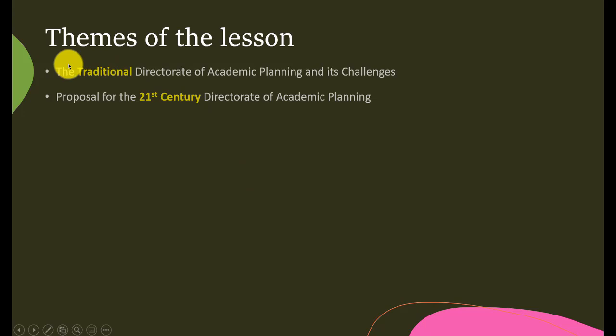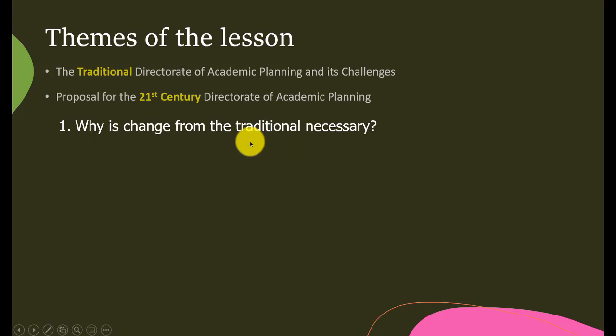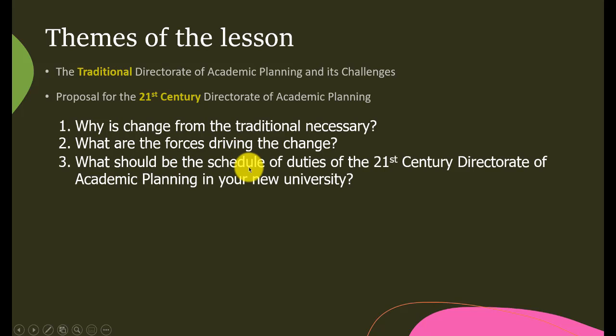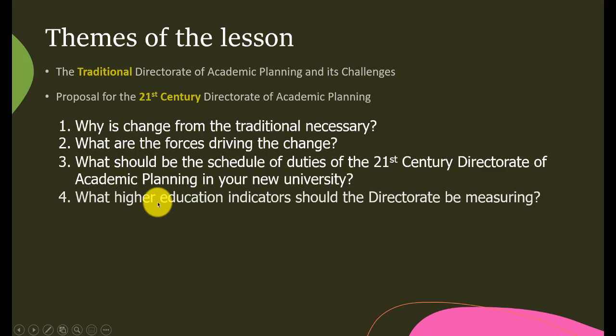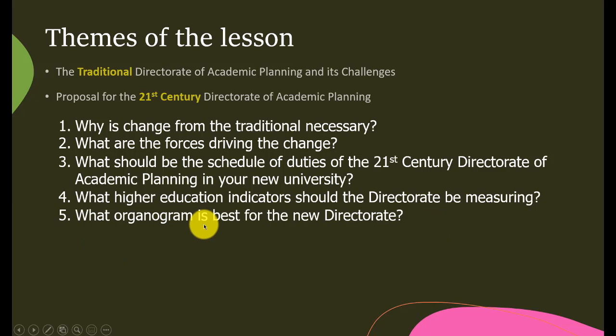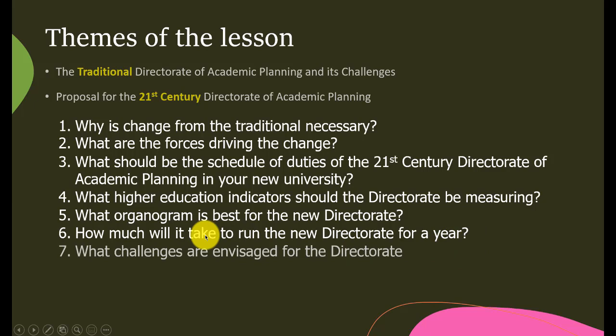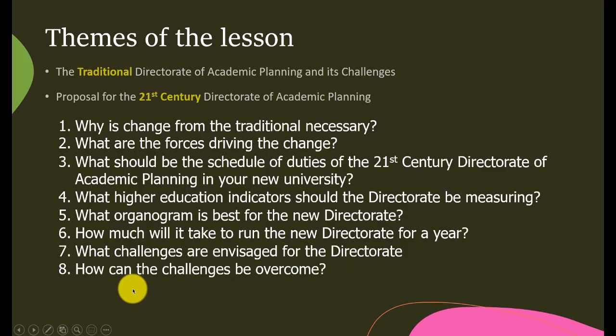I have two themes for this lesson. The first is to look at the traditional Directorate of Academic Planning and its challenges, and we now propose the 21st century Directorate of Academic Planning. We shall be looking at: what makes change from the traditional necessary, what are the forces driving the change, what should be the schedule of duties of the 21st century Directorate of Academic Planning in a new university, what higher education indicators should the directorate be measuring, what organogram is best, and how much will it take to run the directorate for a year.